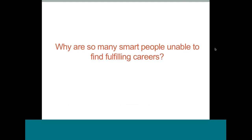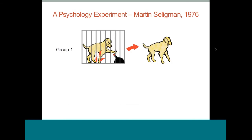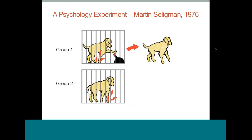So the question is: why are so many smart people unable to find fulfilling careers? To answer this, I want to share an experiment conducted by psychologist Martin Seligman back in 1976. He took two groups of dogs — my apologies in advance to dog lovers. In the first group, a dog was put into a cage and given electric shocks at random. There was a lever in the cage; if he pushed it, he could get out. The dog quickly learned to push the lever and escape. In the second group, same setup, except there was no lever — they were given shocks but were trapped.